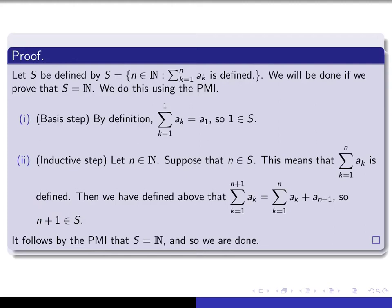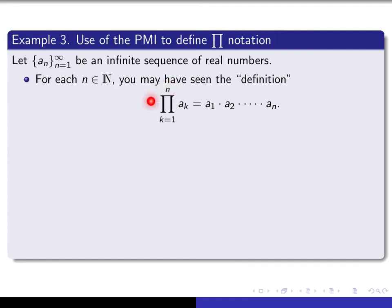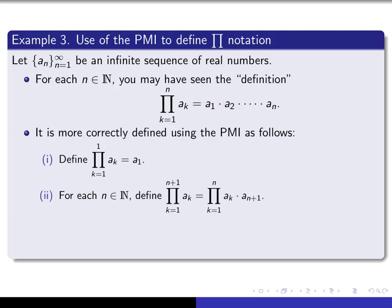In other words, the summation of a_k, k from 1 to n, is defined for all natural numbers n. Finally, I'll show you one last application of this technique using product notation. Just as one can talk about partial sums of an infinite sequence of real numbers, one can also talk about partial products. Informally, the partial product of a_k as k runs from 1 to n is defined to be the product of the first n terms.